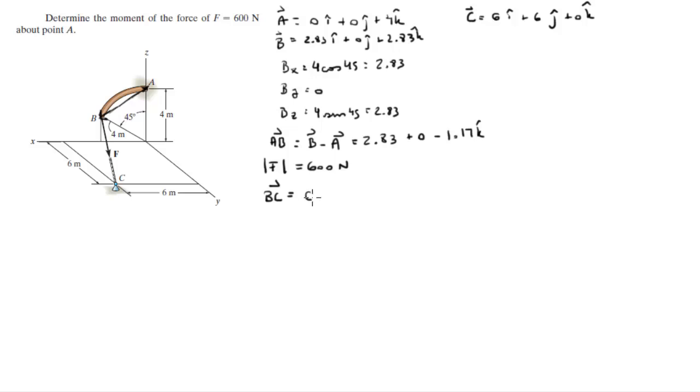Vector BC is vector C minus vector B, and it is 3.17I plus 6J minus 2.83K. Now you need to find the magnitude of this vector. You find the magnitude by doing the X squared plus Y squared plus Z component squared. So you plug in these three values into this vector, and you get that the magnitude is equal to 7.35.